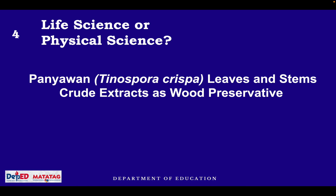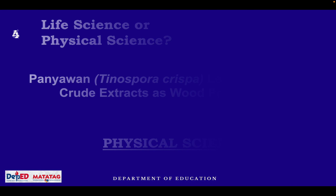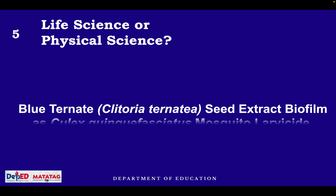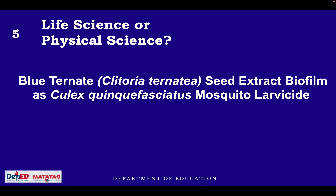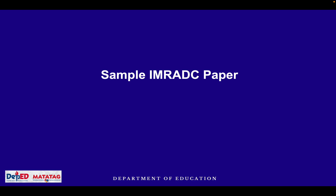Next: Panyawan leaves and stems crude extracts as wood preservatives — this is physical science. Next: Blueternate (Clitoria ternatea) seed extract biofilm as Culex quinquefasciatus mosquito larvicide — of course, this involves mosquitoes, so it is life science.